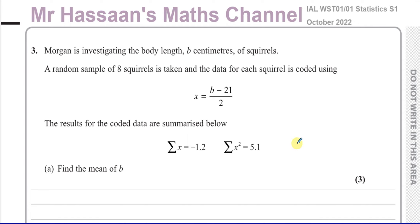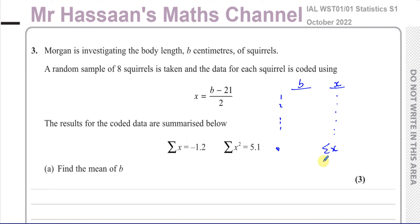Some people may not understand what coding means. What it means is the actual lengths, called b, were found — eight pieces of data. These b values were then put into the expression and coded to become x values. So whatever b value you had, you substituted into this formula: you subtracted 21 from it and divided by 2 to get x. Those x values were added together giving the sum of x, which is negative 1.2. Then all x values were squared and added together, giving the sum of x squared equal to 5.1. That's the summary of the coded data.